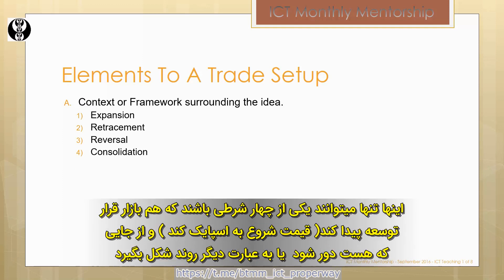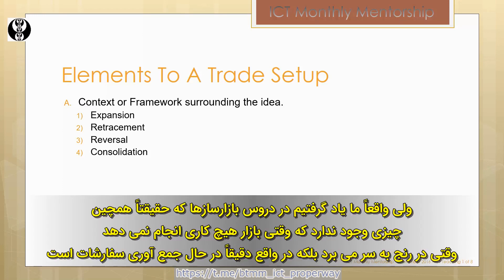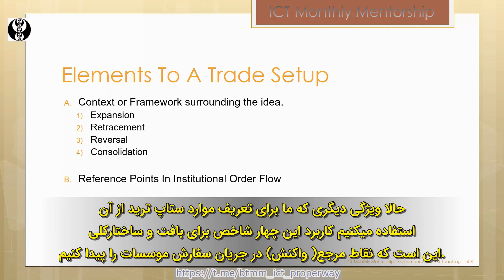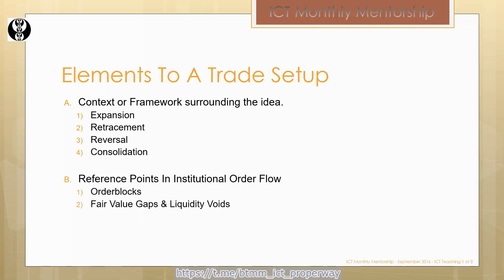Each one of these four conditions gives a specific framework and context to the marketplace you're going to be trading in. The market can only be in one of these four conditions: expanding or trending, retracing or pulling back, reversing, or consolidating. The other characteristic we use for defining elements to a trade setup is two specific reference points in institutional order flow: order blocks and fair value.